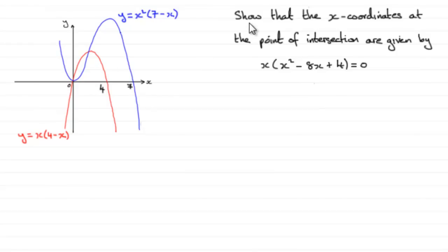In this part of the question, we're asked to show that the x-coordinates at the point of intersection are given by x(x² - 8x + 4) = 0.